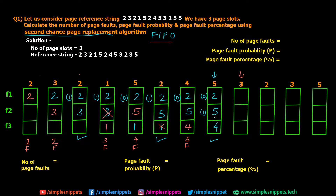Page 3 is requested. Pages 2, 5, and 4 are in memory with all slots full, so we need to replace one. Applying FIFO: page 2 came in first. Its reference bit is 0, so it does not get a second chance this time — it already got its second chance earlier. Page 2 is swapped out and replaced with page 3. Page 5 retains its reference bit of 1, and page 4 remains. This is the 6th page fault.